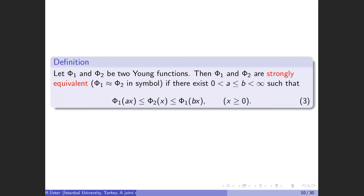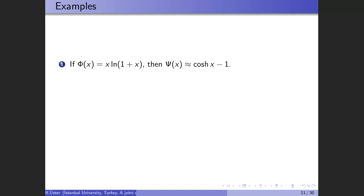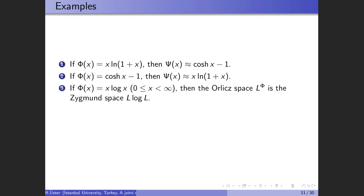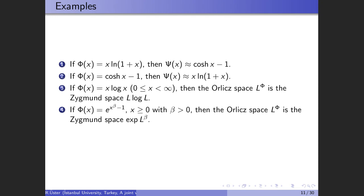For example, if we take the Young function x ln(1 + x), its complementary function psi is strongly equivalent to cosh(x) - 1, and vice versa. Also, if we take the Young function x log x, the Orlicz space is the sigma space L log L. And if we take this exponential Young function, the Orlicz space L^phi is the exponential sigma space.